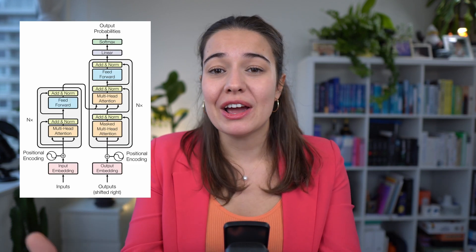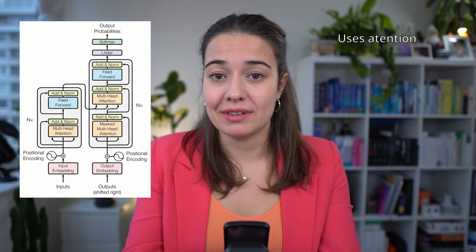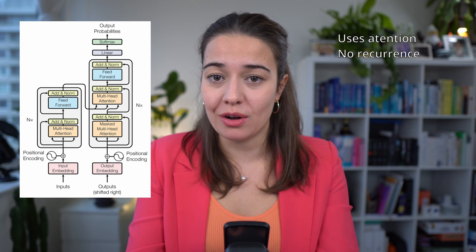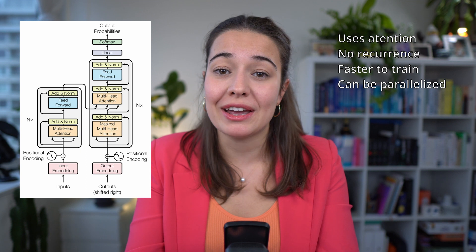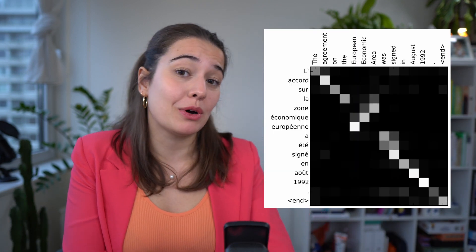Transformers only rely on attention mechanisms to remember things. They do not have any recurrence at all, and thanks to this they are faster because we can parallelize them. Attention is the ability of a model to pay attention to the important part of a sentence, an image, or any kind of input really.